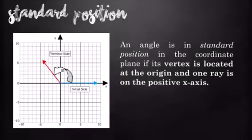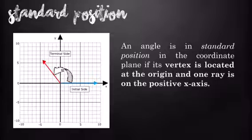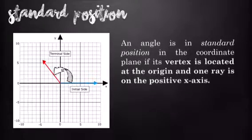An angle is in standard position in the coordinate plane if its vertex is located at the origin and one ray is on the positive x-axis.